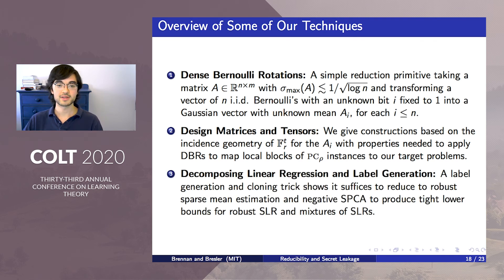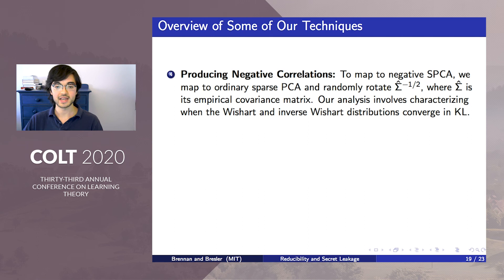Our reductions to robust sparse linear regression and mixtures of sparse linear regressions use a label generation trick and a cloning trick to show that to reduce to these two problems it suffices to reduce to two other problems, robust sparse mean estimation and sparse PCA with a negative spike. While robust sparse mean estimation can be handled with dense Bernoulli rotations, this now means we need a reduction to negative sparse PCA. Reducing to negative sparse PCA turns out to be very different from reducing to ordinary sparse PCA, which is well studied.